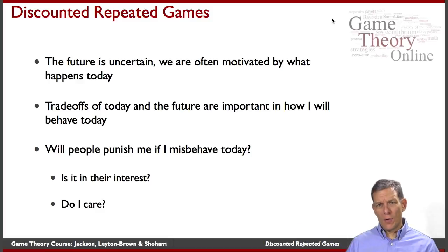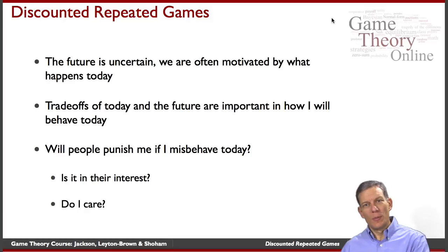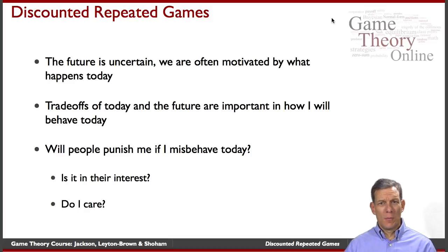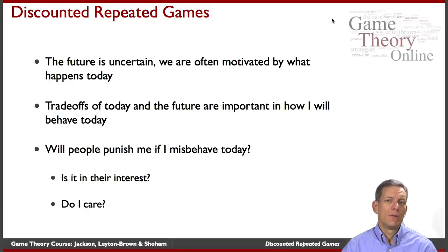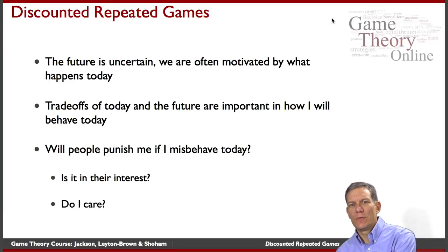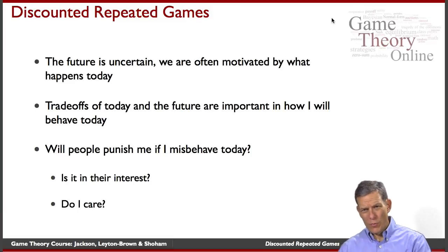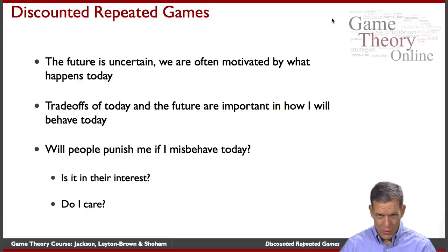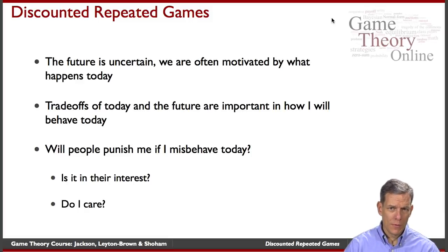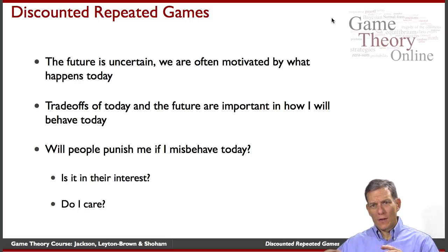The idea of discounted repeated games is the future is uncertain, you're often motivated somewhat by what happens today, and you trade off today versus the future. It's not the infinite future that you care about, but you care about today a little bit more than tomorrow. Maybe tomorrow's value is 80 or 90 percent of today's value, so if today is worth 1, tomorrow's worth 0.9, the next day is worth 0.81, and so on. Things are decaying exponentially in terms of discounting.